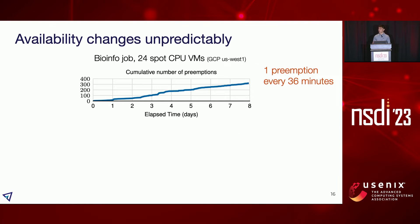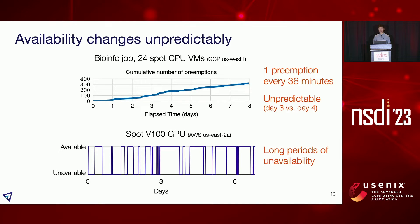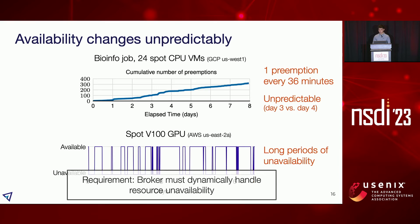The second key requirement is to handle availability changes in the cloud. We are plotting a real user workload trace showing the number of preemptions over eight days. There are quite a lot of preemptions in total, but zooming into each day, the preemptions per day are quite different — so availability changes are unpredictable. The same applies for spot GPU VMs on another cloud, where we see even longer periods of unavailability. The broker must dynamically handle such availability changes and unavailability.